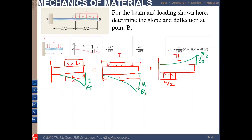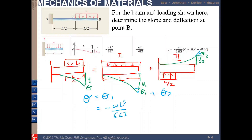We do the same for the slope: theta = theta1 + theta2. For theta1, the tangent to the deflection goes downward, so it is negative: theta1 = −wL³ / 6EI. For theta2, the slope line goes upward, so it is positive: theta2 = +w(L/2)³ / 6EI. We need to keep track of these signs during addition.